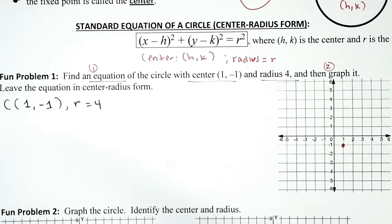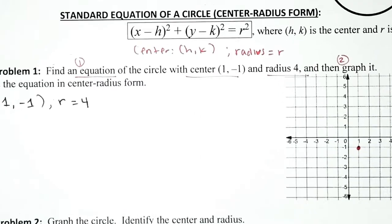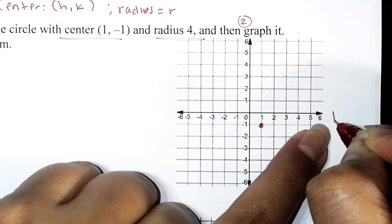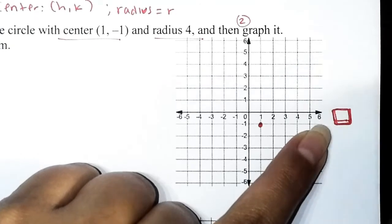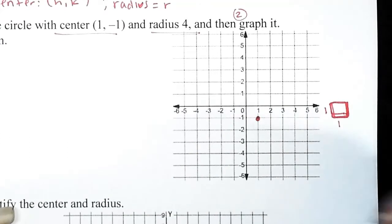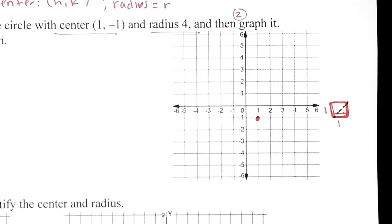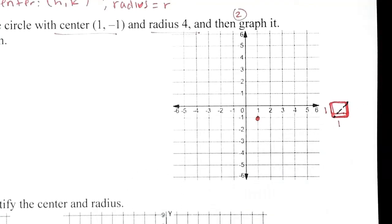You might be tempted to go on a diagonal, but don't. When you go one unit to the right that's one unit, one unit up is one unit — but going diagonally, that distance is actually not one unit; it's the square root of two. So when you locate those four points that are four units away from the center, go up, down, or side to side — never on a diagonal.